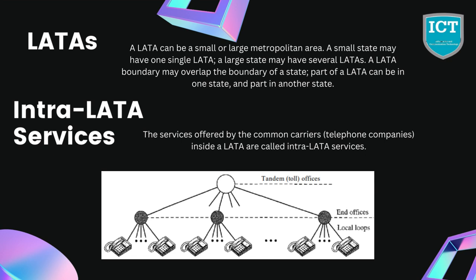After the divestiture of 1984, the United States was divided into more than 200 Local Access Transport Areas, which are LATAs. The number of LATAs has increased since then. A LATA can be a small or a large metropolitan area. A small state may have one single LATA, while a large state may have several. A LATA boundary may overlap the boundary of a state, so part of a LATA can be in one state and part in another.